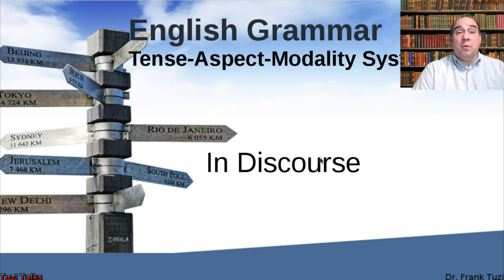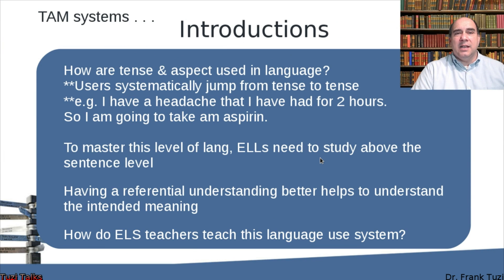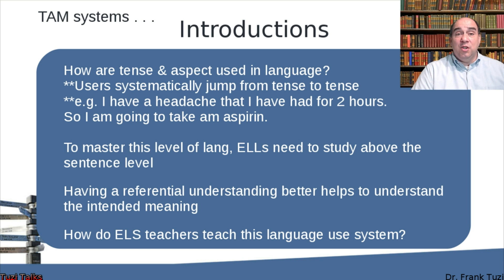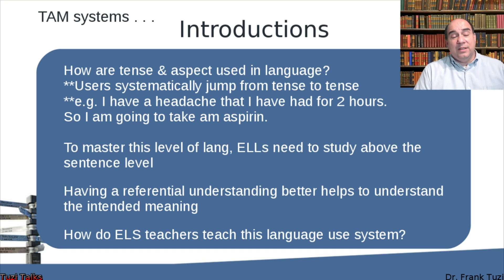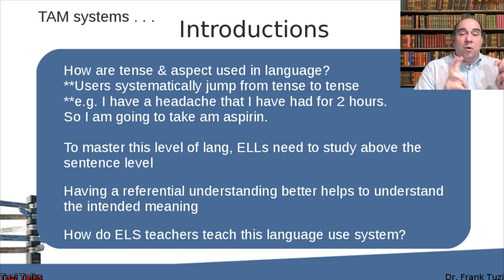So let's jump into this right now and take a look at some of the components involved and how they're actually used in conversation and actual discourse. In the English language there are only two tenses — past and present — and all the other things you add on are the different aspects. That's how we get the variety of times involved in language.